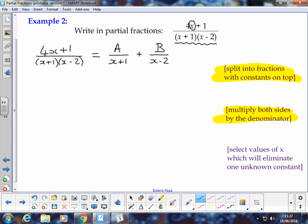So what happens with this is that if I multiply through by x plus 1 times x minus 2, then clearly the denominator disappears on the left-hand side, and I'm left with the numerator 4x plus 1.